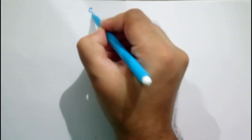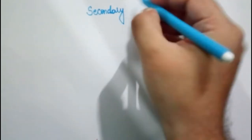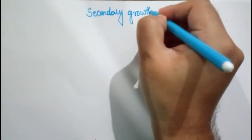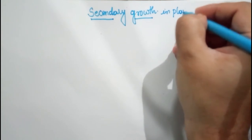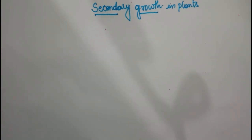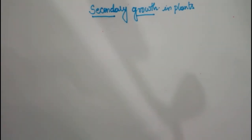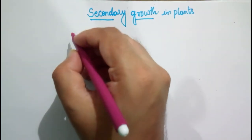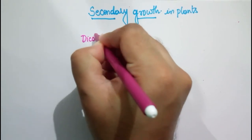We will be doing a video on secondary growth in plants. The first thing we should know is where secondary growth takes place. Normally, secondary growth occurs in dicot stems.